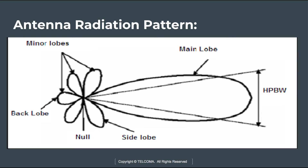The antenna radiation pattern consists of the main beam, side beam, minor lobes, and back lobes. The peak of the main beam represents the highest level of field strength, and it encloses approximately 70 percent of the radiated energy in the main lobe.